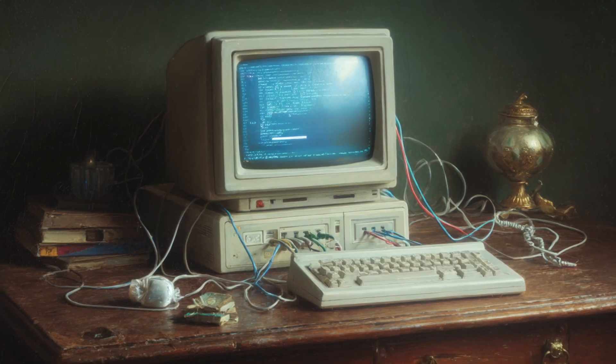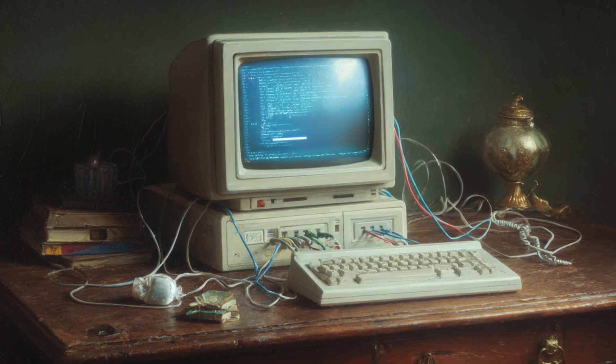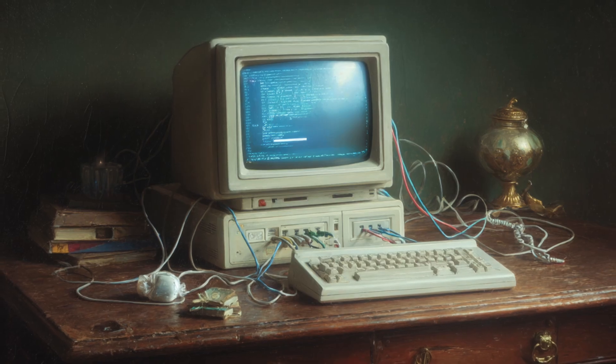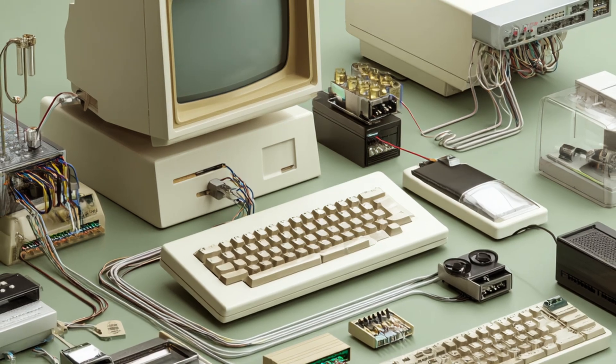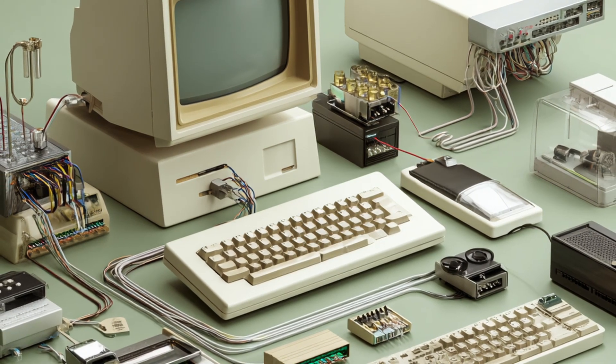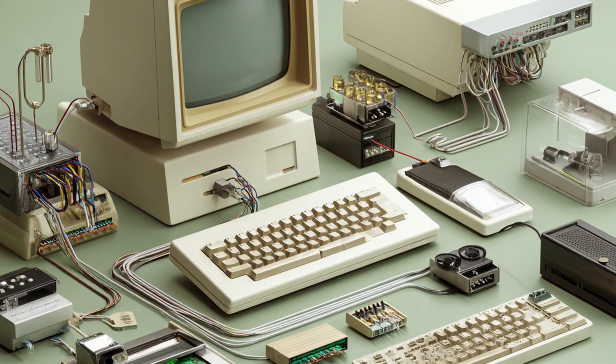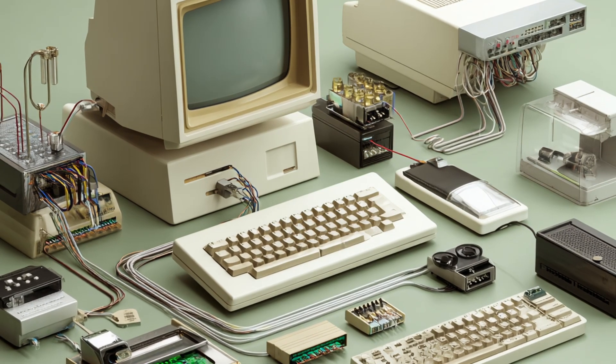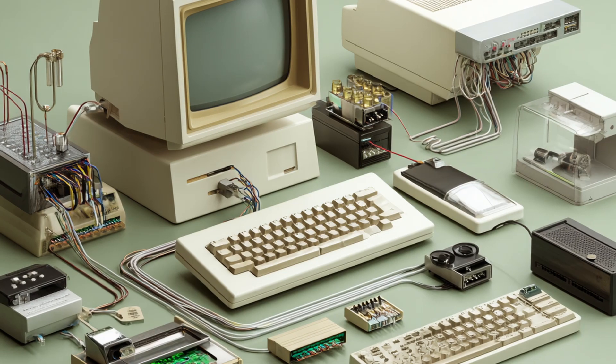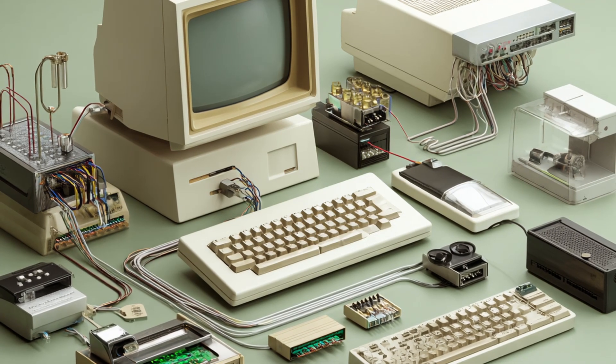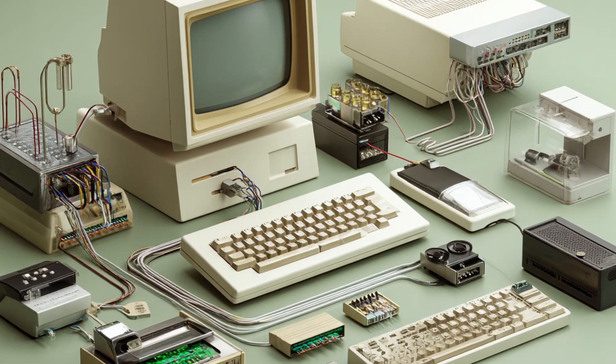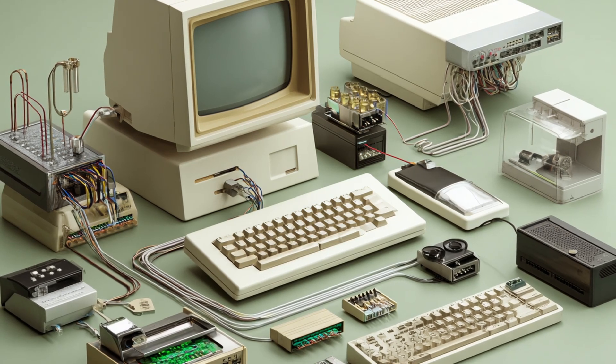FORTRAN kept some awkward turns of phrase, the way a beloved uncle keeps an accent after decades in a new country. The commas and labels of the early days trained a generation to think in jumps that later pedagogy tried to unteach. The culture around FORTRAN sometimes hid behind legacy. There were years when object orientation arrived, like a new religion, and the old believers argued in the churchyard.